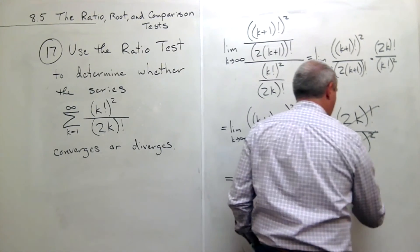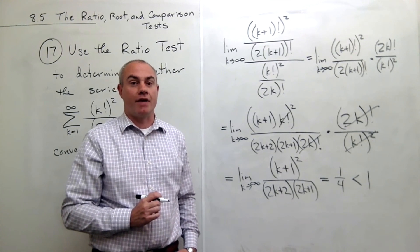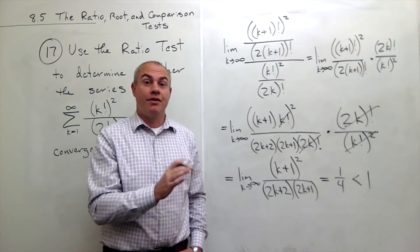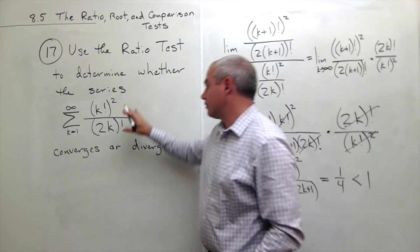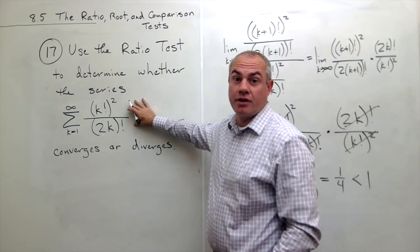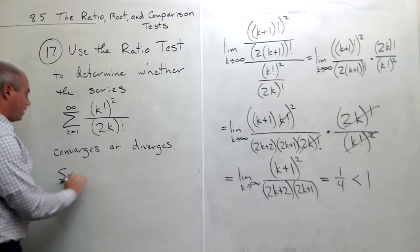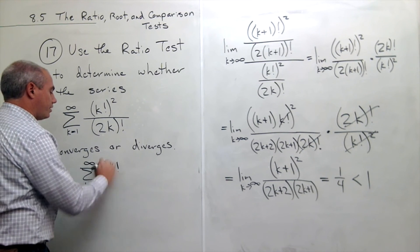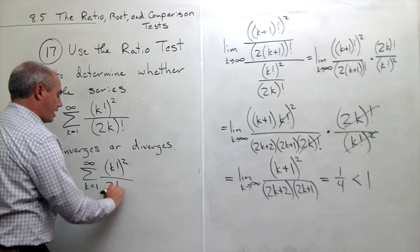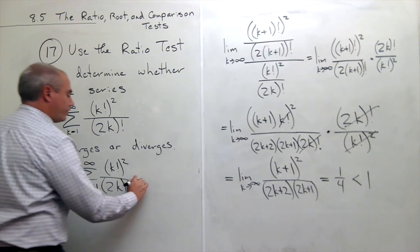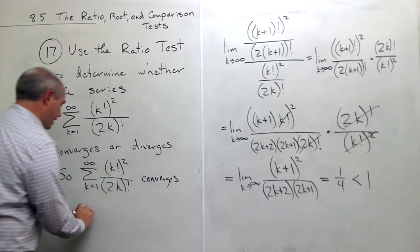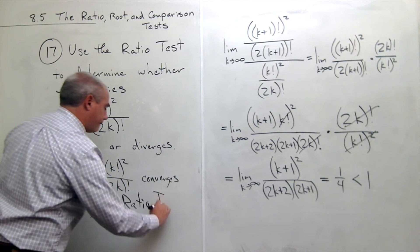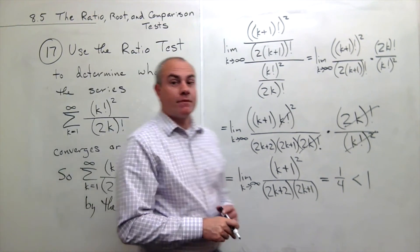I used the ratio test and came out with a value of one fourth. One fourth is less than one. The ratio test tells me that if I get a value less than one, then the original series must converge. So my final answer is that the sum k going from one to infinity of k factorial quantity squared over two k factorial converges by the ratio test. And we are done.